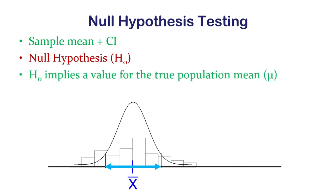That null hypothesis is usually a statement of potential fact, but for this to work it has to imply a value for the true population mean. Whenever I say mu with nothing attached to it, it means the true population mean.